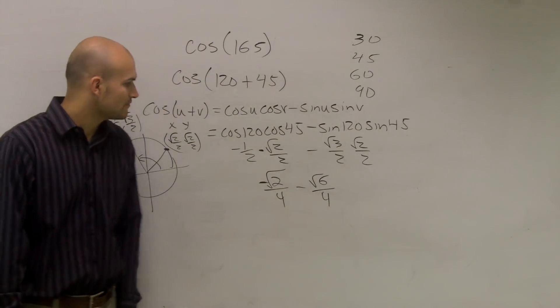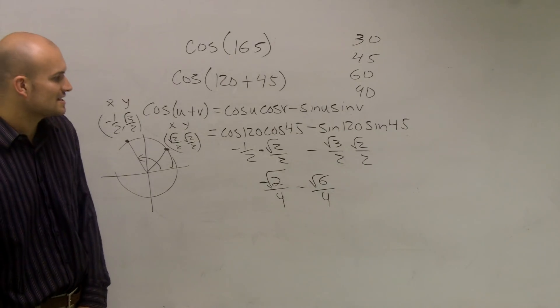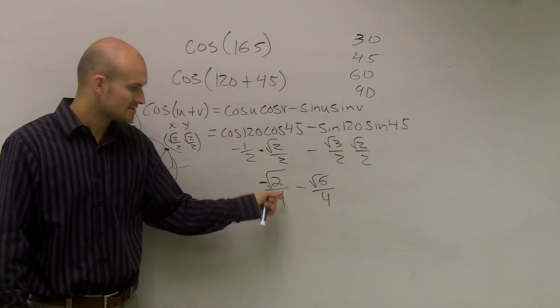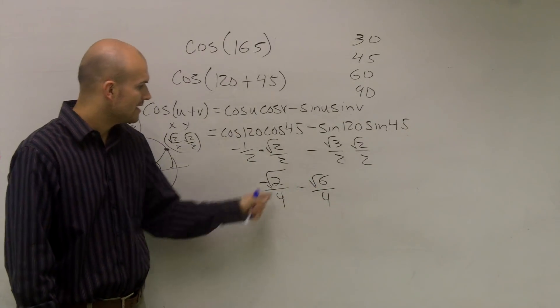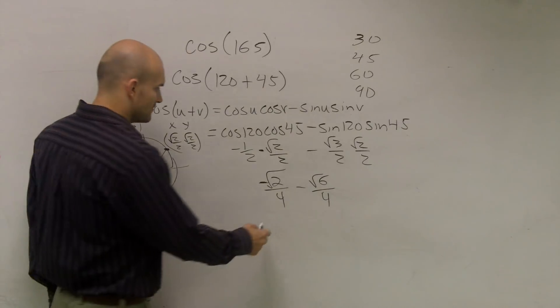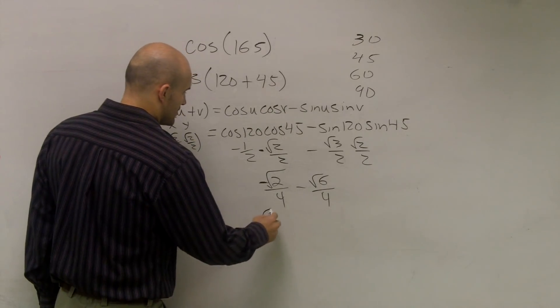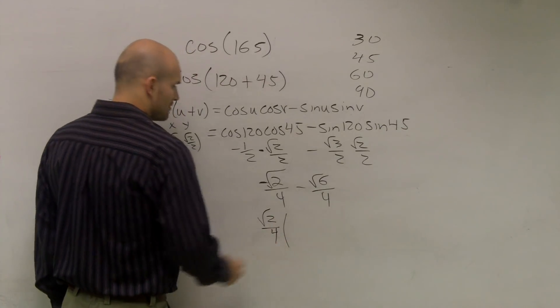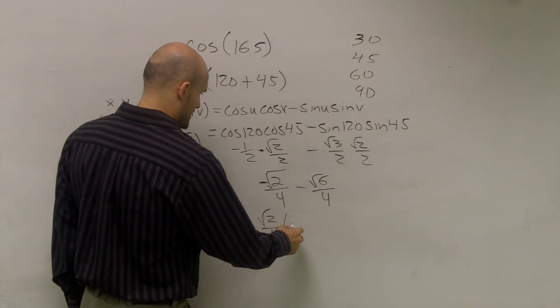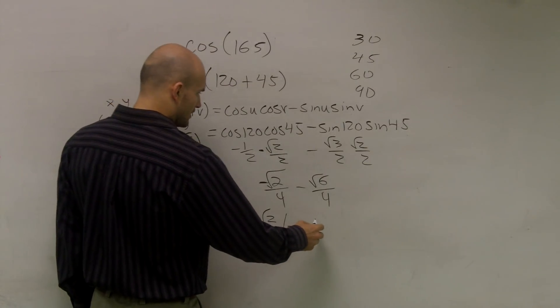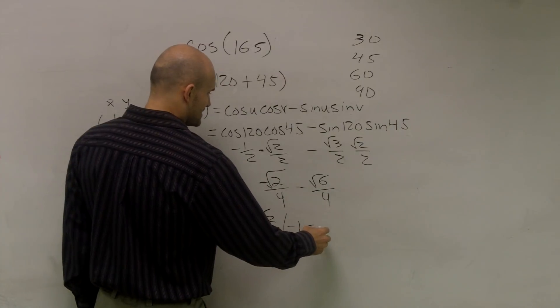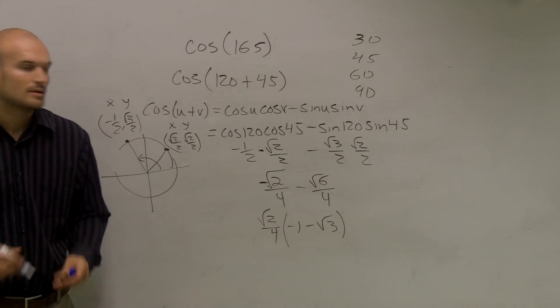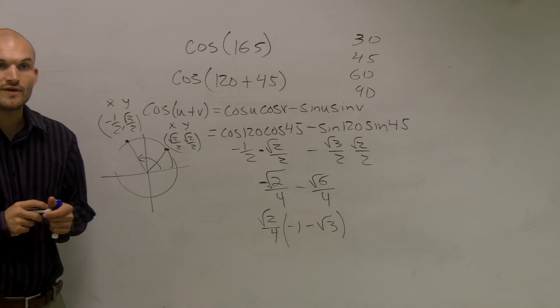So therefore I have a negative square root of 2 minus the square root of 6, both over 4. One thing you notice is you can also factor out a 4 from the bottom and also a radical 2. So you can factor out a radical 2 over 4, and what you'll be left with is negative 1 minus radical 3. And that is going to be your final answer.